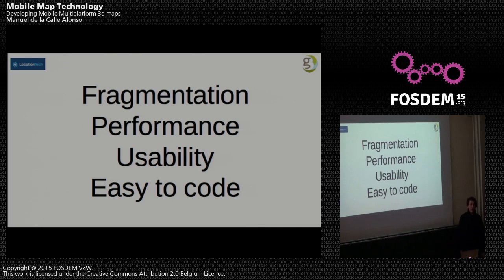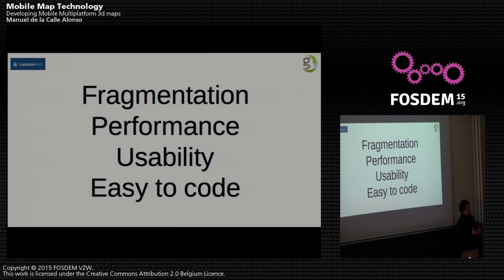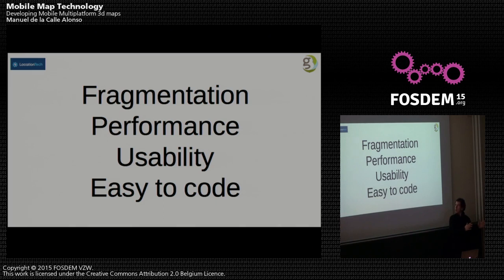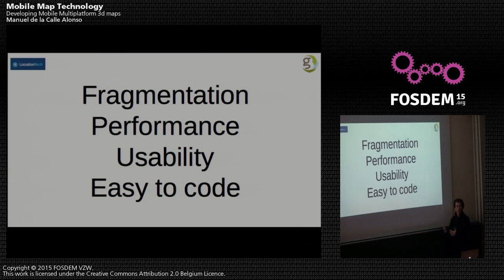Another problem is usability. All the maps developed for the web were designed around web usability. But usability on mobile devices is different — the resolution of your finger is different than the resolution of a mouse. Developing for mobile is absolutely different. And another key idea is ease of code: we need you to be able to start with the library in a very easy way, because the problem is complex.